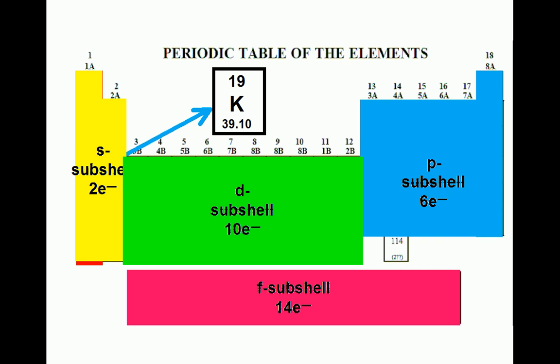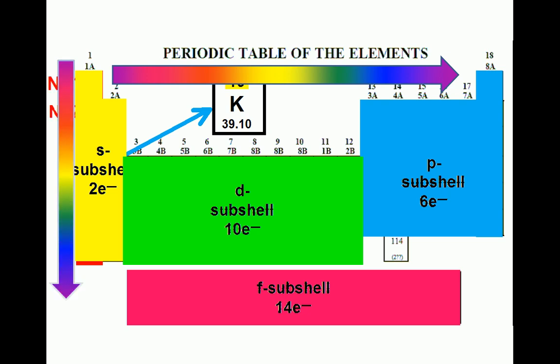The periodic table is arranged such that the energy of the electron subshells increases from left to right and from top to bottom. Each row of the periodic table represents a new energy level, and we place the electrons in the orbitals accordingly.